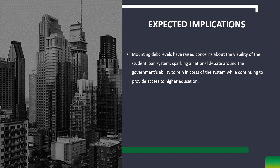Accounting for debt levels have raised concern about the viability of the student loan system, sparking national debate around the government's ability to rein in costs while continuing to provide access to higher education. Critics are concerned that a proposed $7 billion budget cap for the Department of Education may limit the effectiveness of suggested changes to federal work study and loan repayment programs. Additionally, critics worry that borrowers may have fewer loan options and pay higher prices, and that the new system gives preferential treatment to specific career pathways. Critics of the College Affordability Act point out that a $500 boost to Pell Grants still falls well short of covering the majority of four-year institutions' cost of attendance.